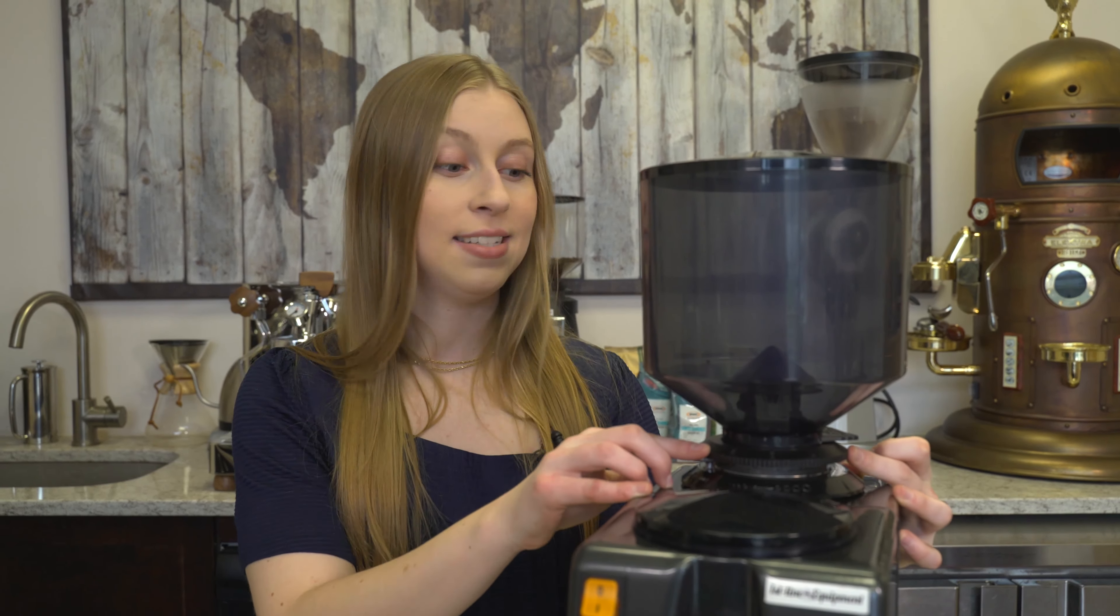Now let's go ahead and open up the dosing chamber. Right here, right in the center, you'll see that there's a dosing adjustment wheel. If you turn that clockwise, you're going to decrease the amount of coffee that you're dosing, whereas if you turn it counterclockwise, you're going to increase the amount of coffee that you're dosing.